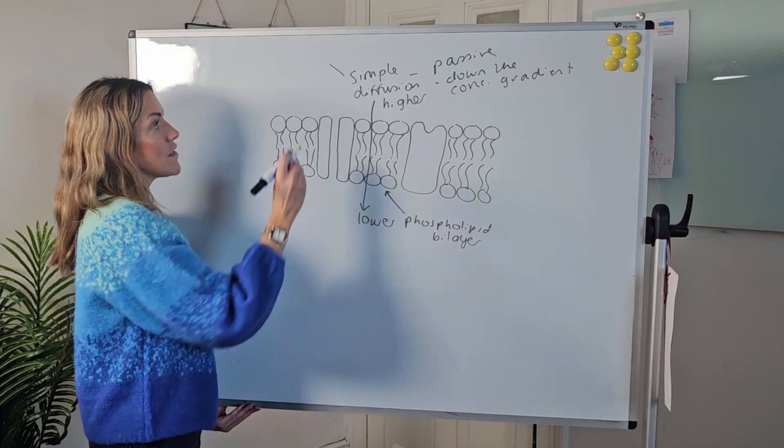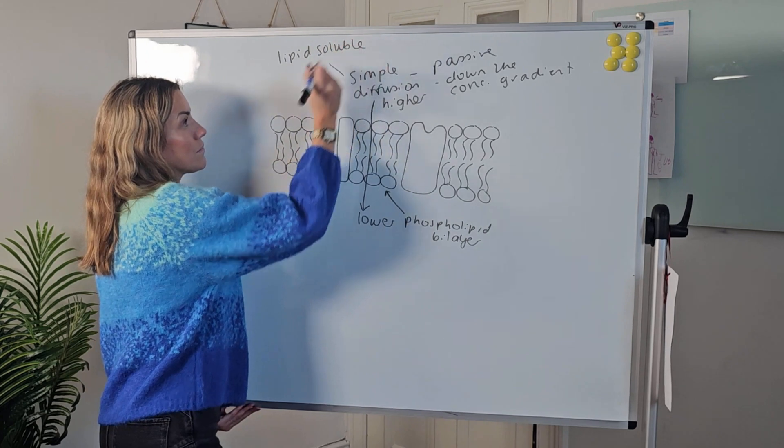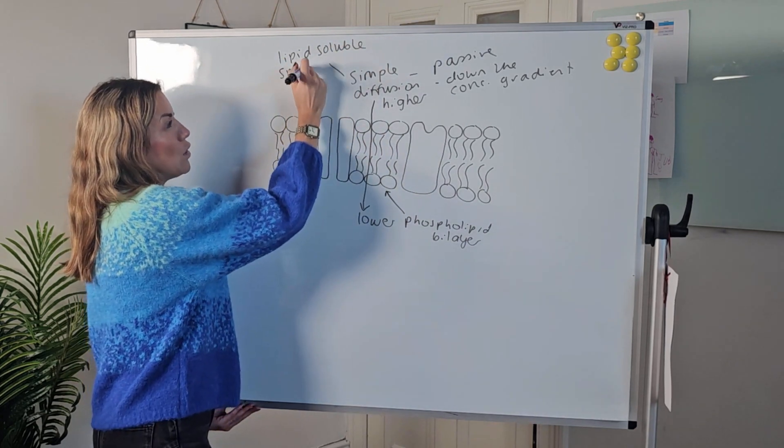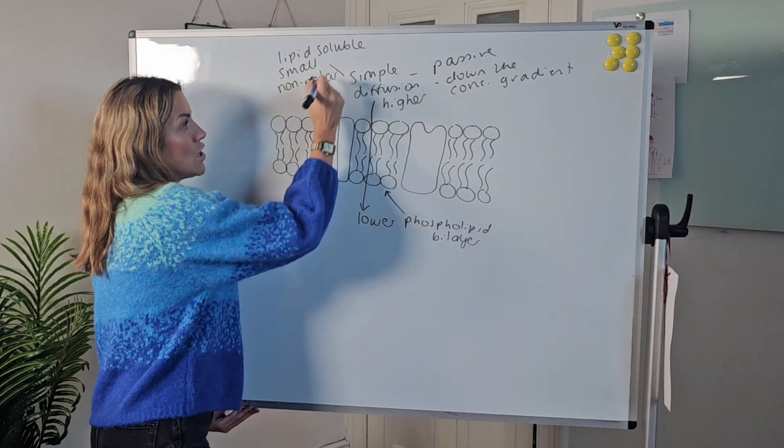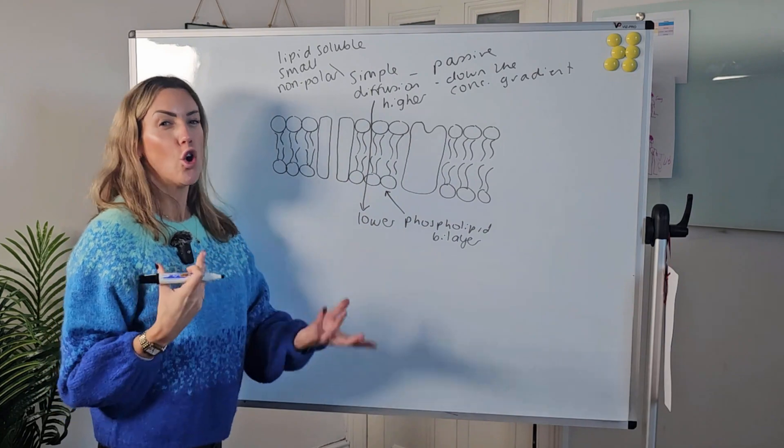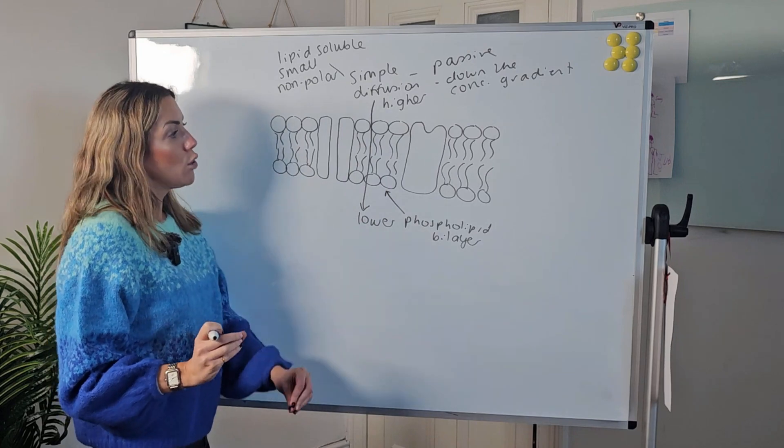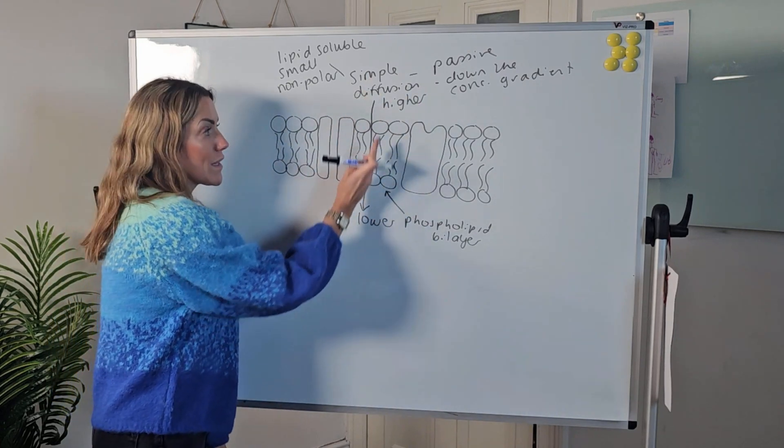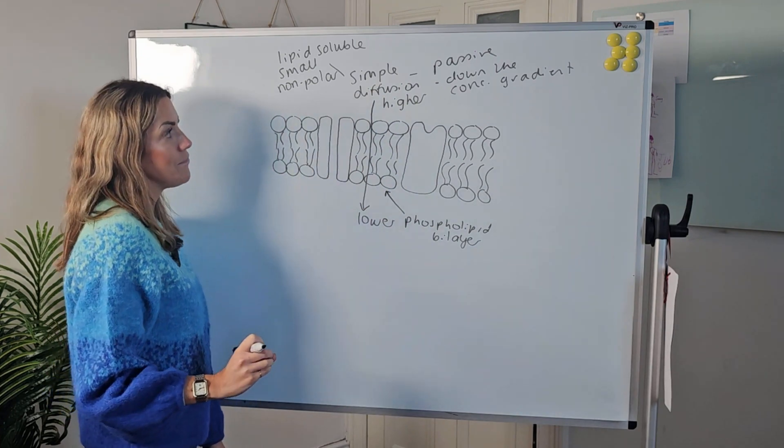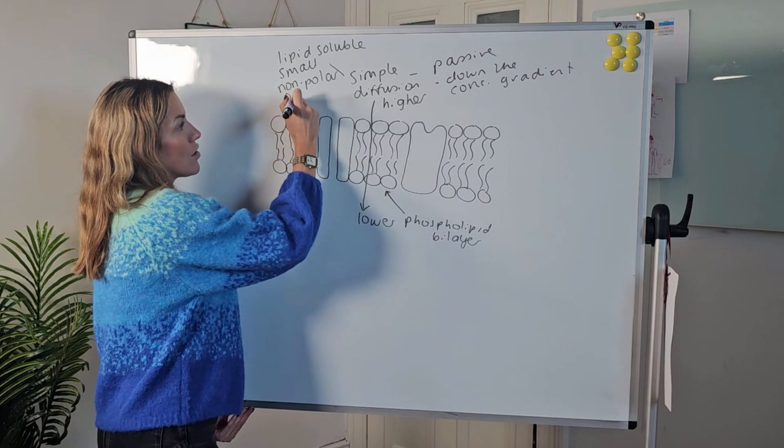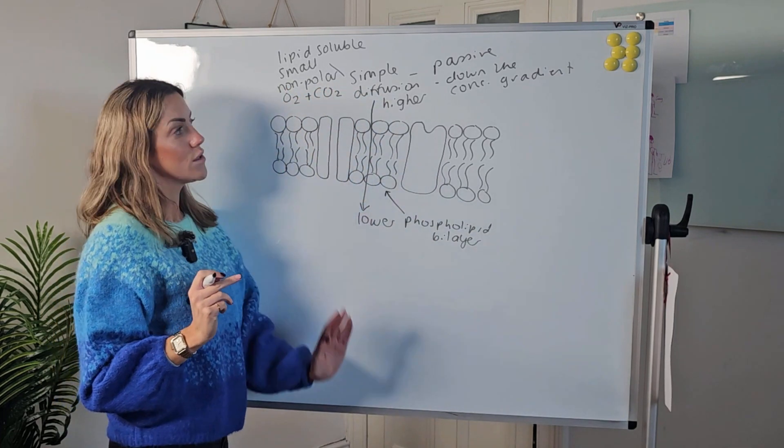This would be for substances that are lipid soluble and they'd have to be small and non-polar, so no overall charge or uneven distribution in charge. Small, non-polar, lipid soluble because they can dissolve and move through that phospholipid bilayer. We're talking things like oxygen and carbon dioxide. They can use simple diffusion.